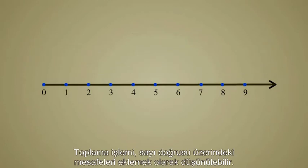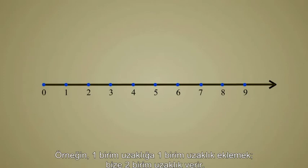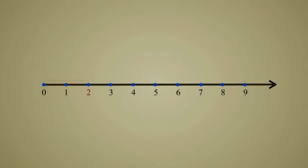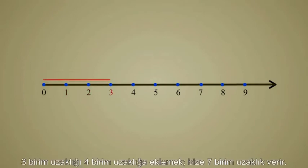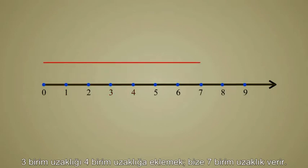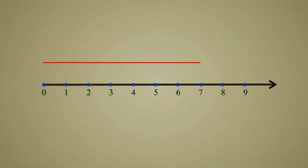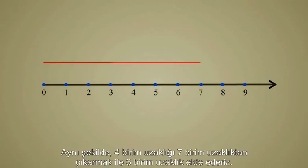Addition can be thought of as adding distances on the number line. For example, adding one unit distance to one unit distance gives us a distance of two units. Adding a distance of three units to a distance of four units gives a distance of seven units. Likewise, if we subtract a distance of four units from a distance of seven units, we get a distance of three units.